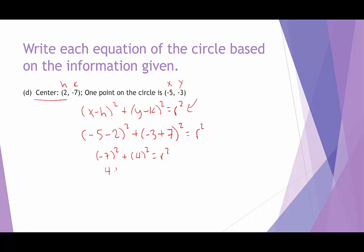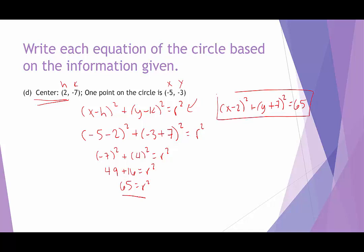Negative 7 squared is 49, and 4 squared is 16. 49 plus 16 is 65, so r squared equals 65. We don't need the radius itself — just r squared. With r squared and the center known, we write the equation: x minus 2 quantity squared plus y plus 7 quantity squared equals 65.